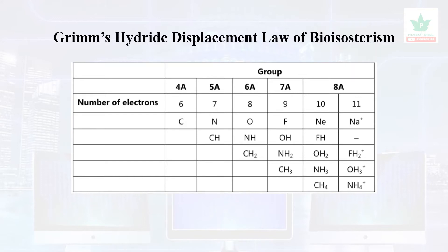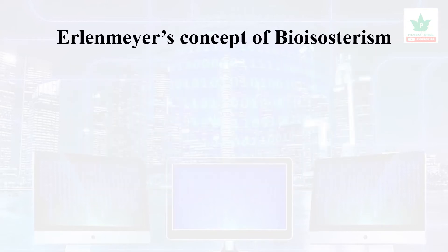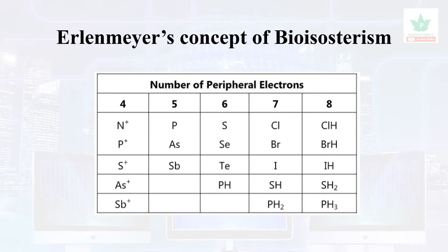The Erlenmeyer concept is based on the number of peripheral electrons. Under this concept, chlorine could be interchanged with bromine or iodine, or with RSH or phenyl hydride groups.